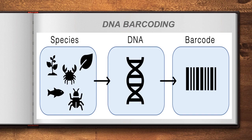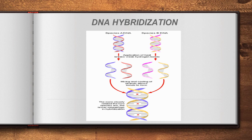DNA hybridization is a technique where two DNA samples are combined. First, the double-helix DNA strands from two varieties (A and B) are separated. Then, strand A combines with strand B's complement and vice versa, producing a new hybrid DNA. This method helps in studying and comparing DNA between different species.